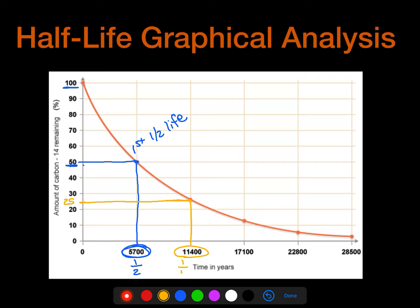And at this point, we would be at one quarter of our original sample that we started with, because 25 divided by 100 would give us a quarter, or 25 percent. The next one, if we take a look at one more half-life, so that was the second half-life.